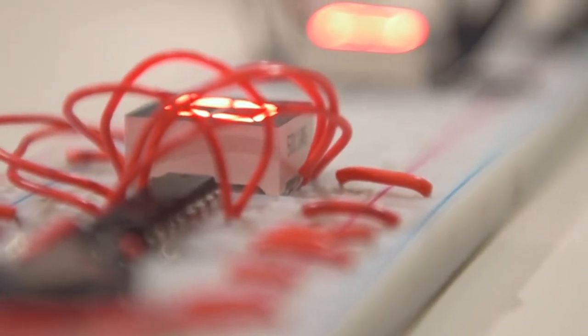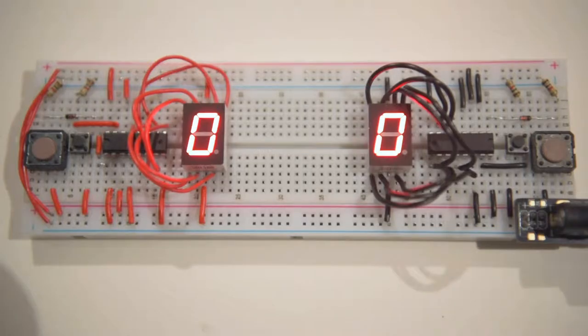The way that the scoreboard functions is by using the logic of the 4033 IC chip. The scoreboard is two miniature circuits that are combined into one to create the scoreboard. When a high is presented on the clock pin of the 4033 IC chip, the scoreboard advances by one.